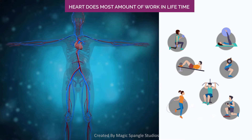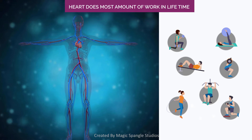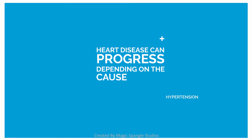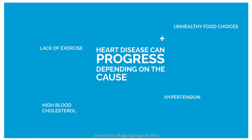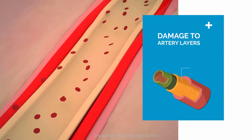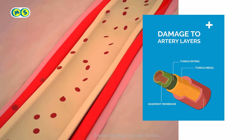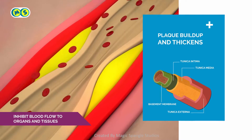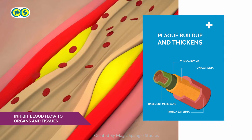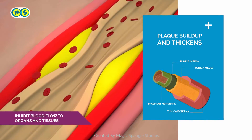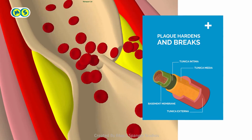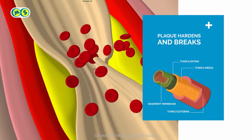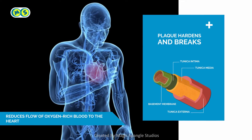The human heart does the most amount of work during our lifetime, and as such it is extremely important to keep our heart healthy and prevent heart disease. Heart disease can progress in a number of different ways depending on the cause. Heart diseases generally begin with damage to the lining and inner layers of your heart arteries. Plaque buildup thickens and stiffens artery walls, which inhibits blood flow to your organs and tissues.